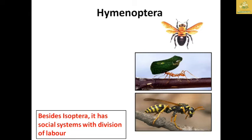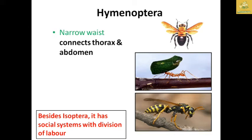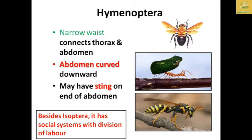Hymenoptera have a narrow waist connecting the thorax and abdomen, and the abdomen is curved downward. They may have a sting at the end of the abdomen or it can be absent. Beside Isoptera, this order has the most advanced social system with division of labor. Examples shown include a carpenter bee, red ants, and a yellow jacket wasp.